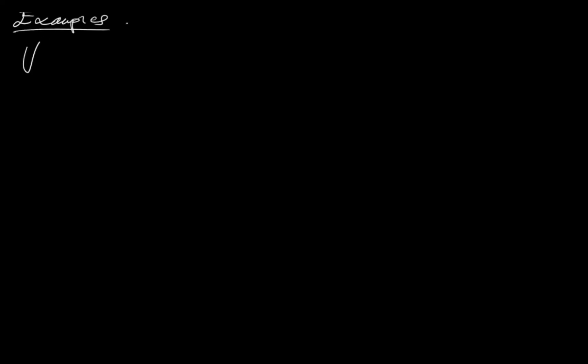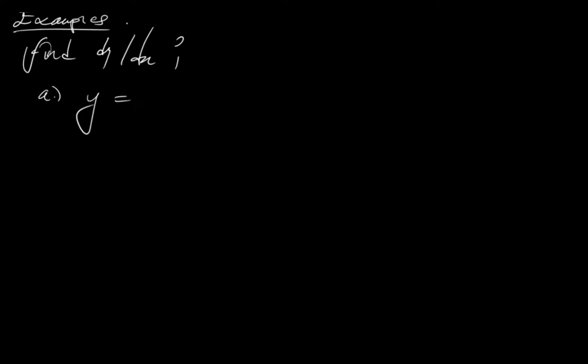So we have examples that ask us to find dy/dx. To find dy/dx of a given function, say y is equal to ln(x⁷). What you have to understand is that this is written in the form ln of x⁷. All you have to do here is simple. To find the derivative of this function, we say y' is equal to 1 over something. Now here, what is our something? Something here is x⁷.